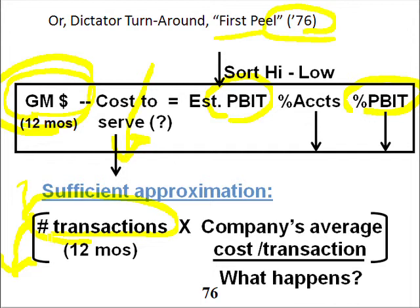Did we really make $15,000 in PBIT on an account, or really lose $10,000? It didn't matter. At the very extremes, the winners were winners and the losers were losers. So let's not lose the best and do more with them, and let's turn around the losers.